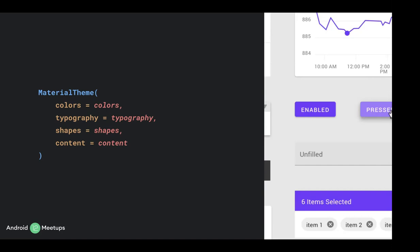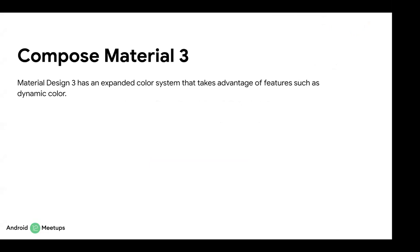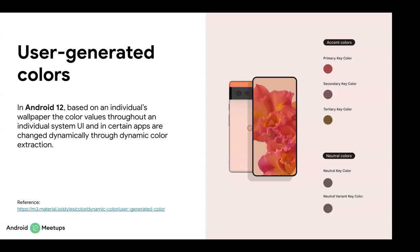Material Theme is enhanced by Material 3. Compose Material 3 is the new Compose library to support Material You. It is currently in alpha, and it includes Material You features like dynamic colors that we talked about earlier. So what are the main differences between Material Design 2 and Material Design 3?